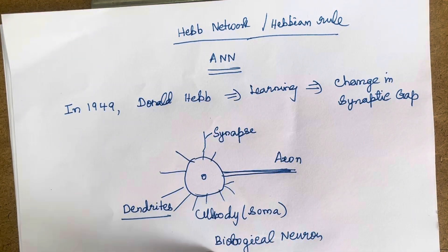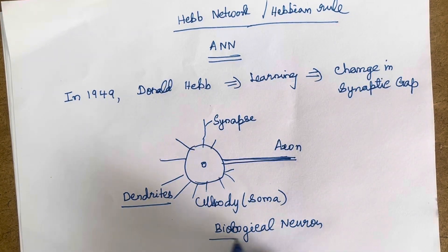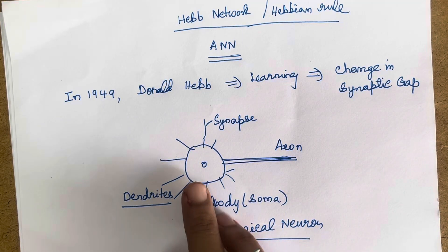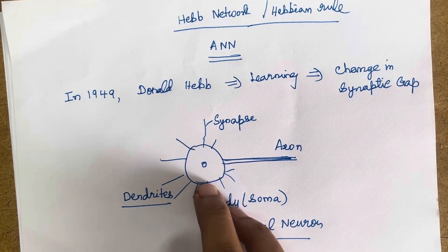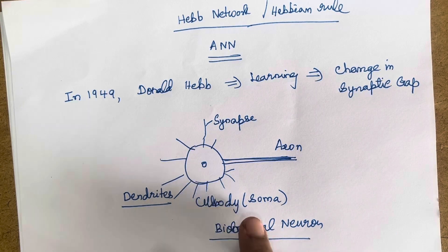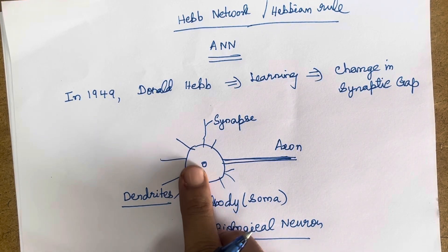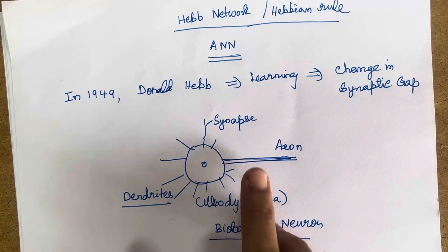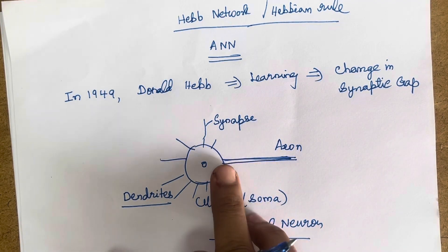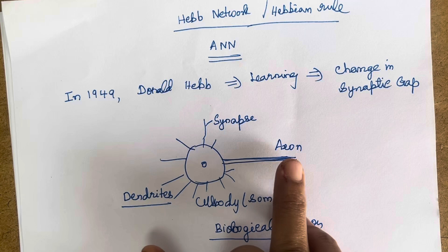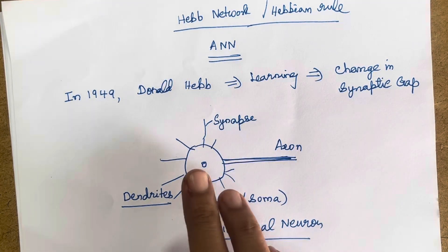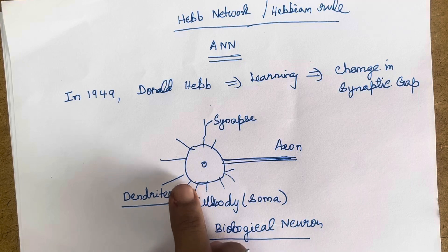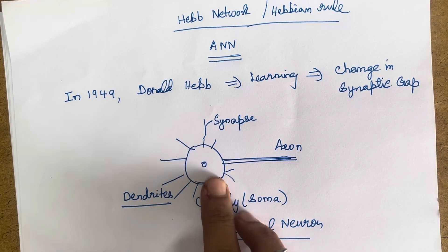Let me explain with the help of a biological neuron. Each neuron has three main parts: one is the cell body, otherwise called soma, where the nucleus is located. Another part is the axon, which is a single long connection extending from one neuron to another neuron. The third part is the dendrites, which are small nerves connected to the cell body.